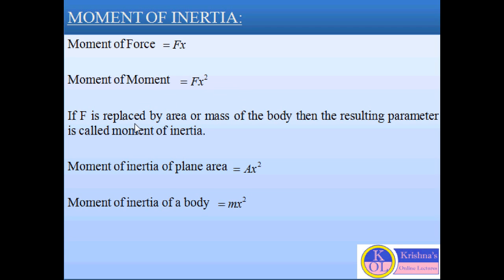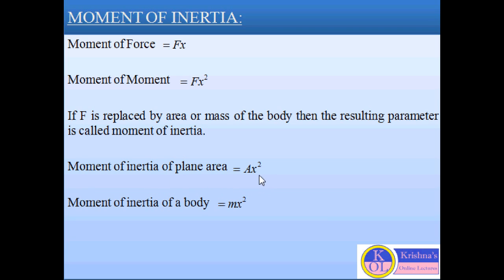Now, if we replace F by the area or the mass of the body, then the resulting parameter is called moment of inertia. If we replace F by A, the area of the body, then the moment of inertia for the plane area will be AX square, where X is the perpendicular distance.